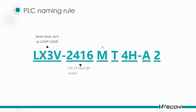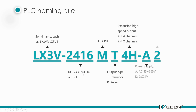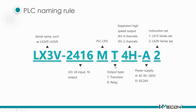Here is the naming convention of the POC. '2416' means the I/O terminal number. 'MT' means transistor, 'R' means relay. '4H' means 4 channels of expansion high-speed output, '2H' means 2 channels. 'A' means AC power supply, 'D' means DC. The last number, '2', refers to the instruction set — generally we use the LX2N series instruction set.